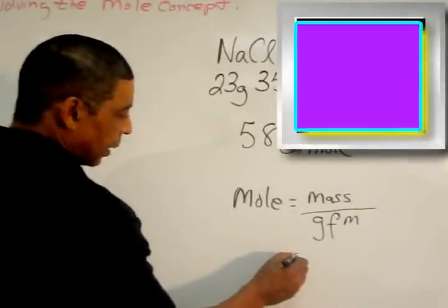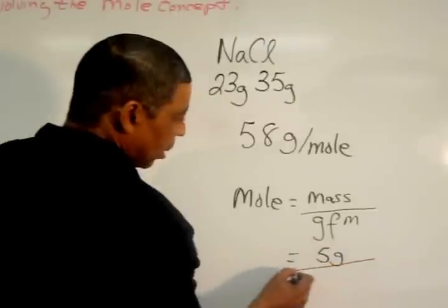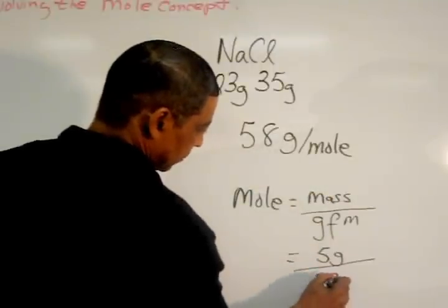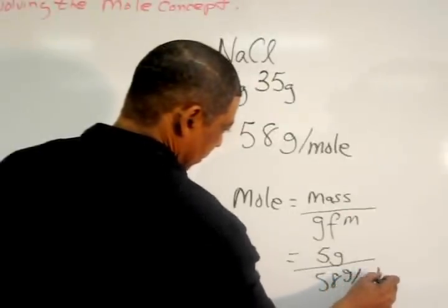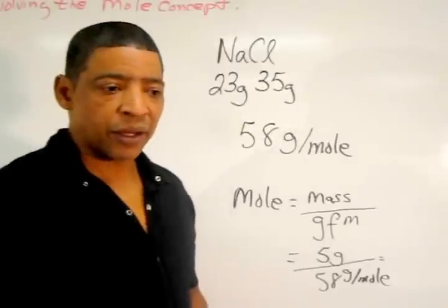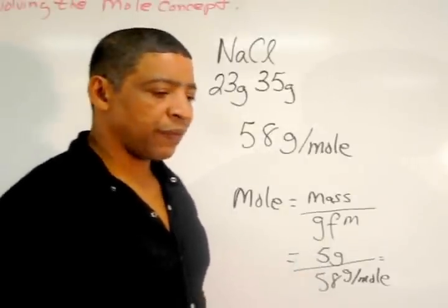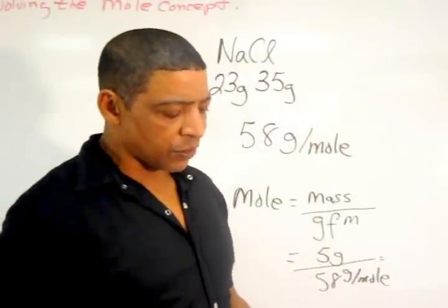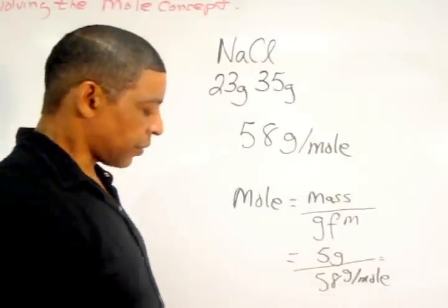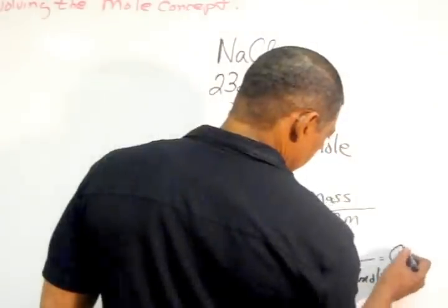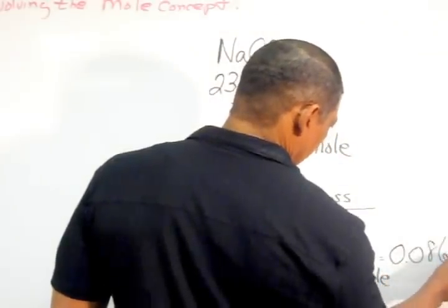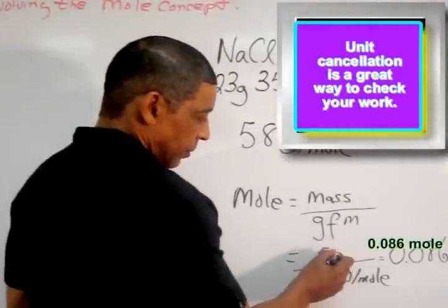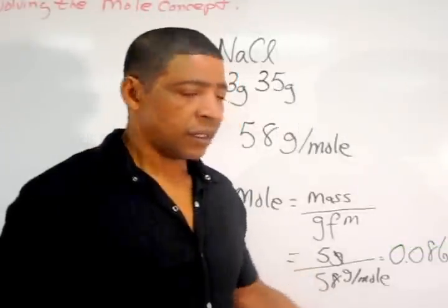If we're given 5 grams of the compound, and we know that the gram formula mass is 58 grams per mole, then the number of moles may be calculated by dividing 5 grams by 58 grams per mole. 5 grams divided by 58 grams per mole is equal to 0.086 mole. So our answer is 0.086 mole. Notice, in this particular case, grams cancel, which leaves us with units of moles.